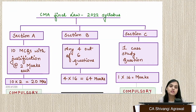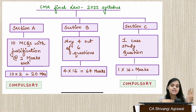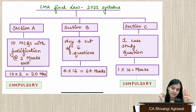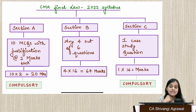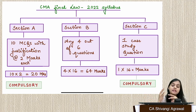Moving to the new 2022 syllabus, it is divided into three sections. Section A is exactly the same as the old syllabus. Section B offers immense choice — four out of six questions have to be attempted, and these are usually direct questions. Section C has one case-based question which is compulsory. So Section A and Section C are compulsory, and from Section B you select four questions for your examination.